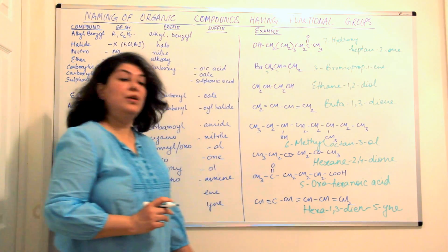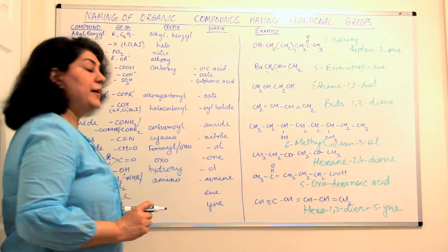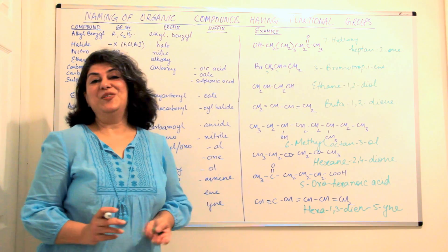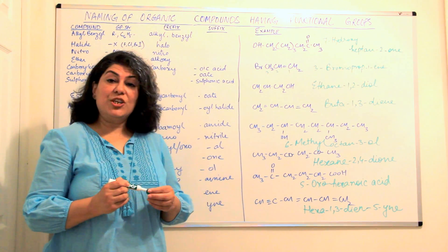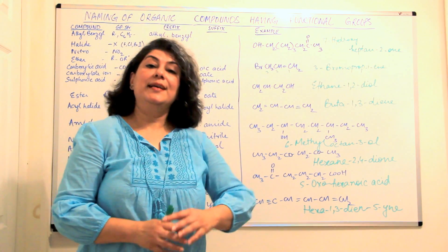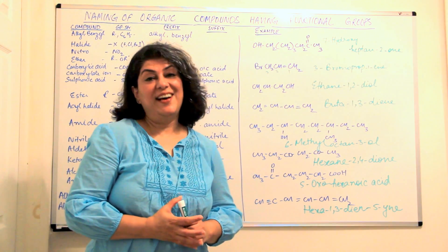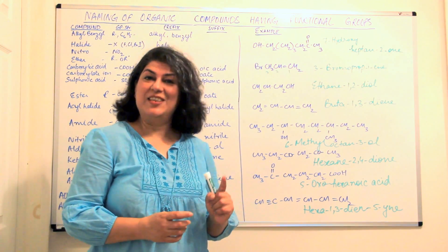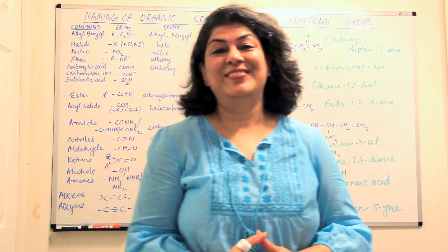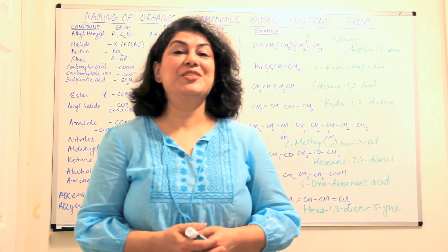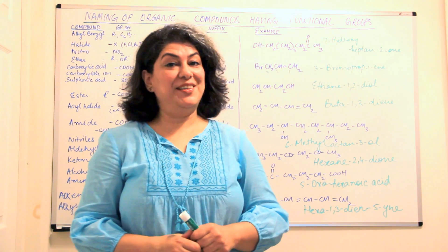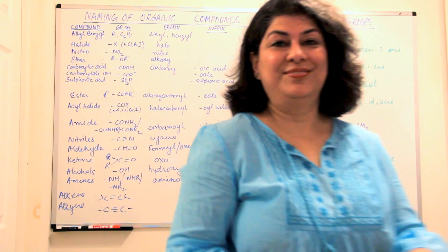We give more importance to 'ene' because it is higher in priority, so we count from the side where the ene gets the lower locants. Just keep the rules and their sequence in mind — it is easy to name these hydrocarbons, but the key is to practice as much as you can. Thank you for watching. If you like the videos, please like them, subscribe to my channel, and keep returning for more.